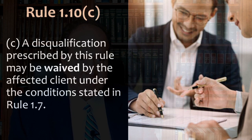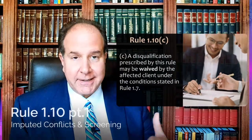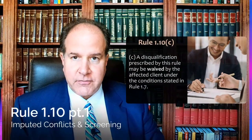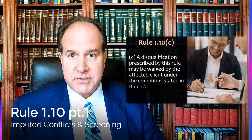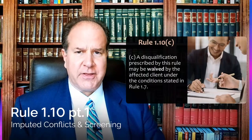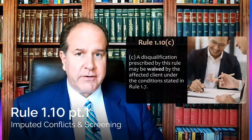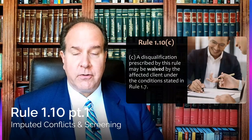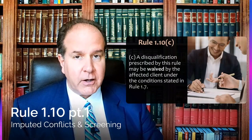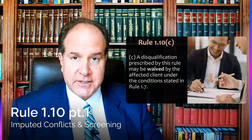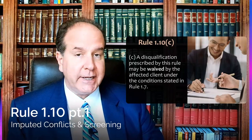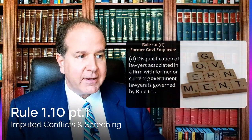Rule 1.10(c): disqualification provided by this rule may be waived by the affected client under the conditions stated in Rule 1.7 — meaning informed consent confirmed in writing. So if the other client doesn't care and gives informed consent confirmed in writing, they can waive the conflict, in which case we don't really need to worry about screening and notice.